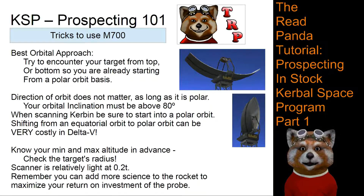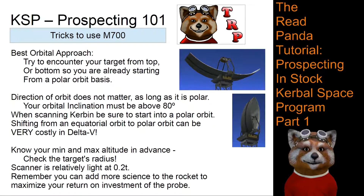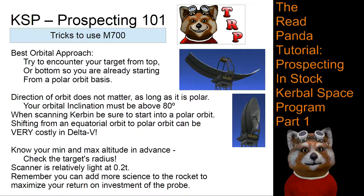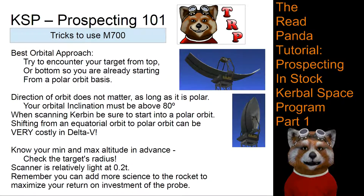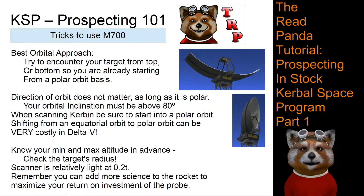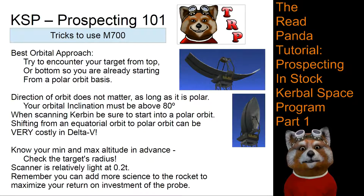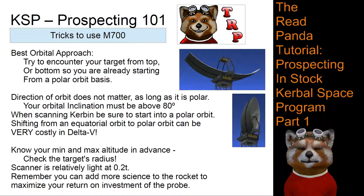When approaching the planet or moon you're going to scan, try to encounter your target from either the top or bottom so you're already approaching in a polar encounter. If you approach and get an equatorial orbit, it takes a lot of delta-V to change to a polar orbit. Make sure your inclination is within that 80-degree margin. If you're going to scan Kerbin itself, be sure to switch to a polar orbit at launch — just start heading north instead of east.